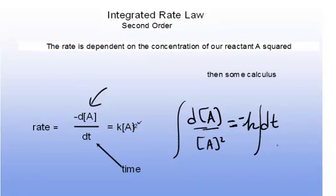We can integrate both sides and recognize that the integral of 1/x² is -1/x. Solving this integral, we end up with -1/[A] at some time t minus a negative, which would be plus 1/[A]₀, equals -kt.